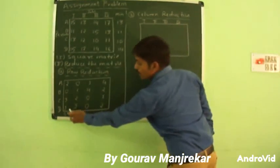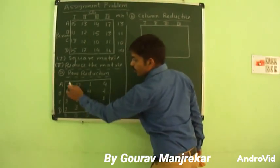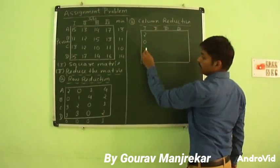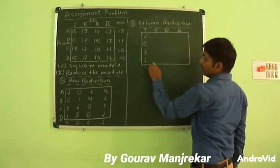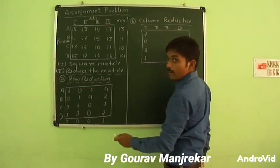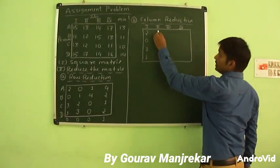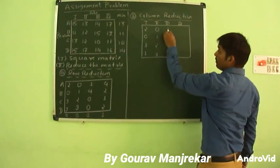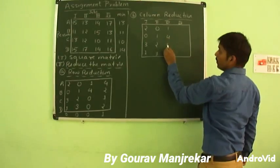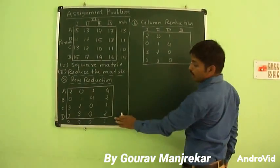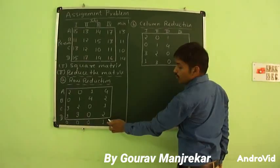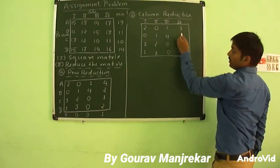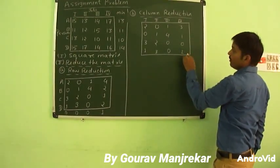In the 1st column the minimum is 0, so subtracting 0 we get the same elements: 2, 0, 3 and 1. In the 2nd column, subtracting 0 gives the same: 0, 1, 2, 3. In the 3rd column, subtracting 0 gives: 1, 4, 0 and 0. In the 4th column the minimum is 1, so subtracting 1 gives: 4−1=3, 2−1=1, 1−1=0, 2−1=1.